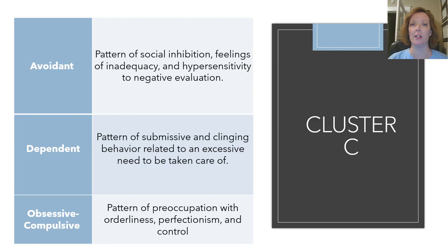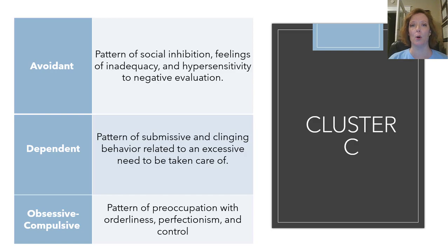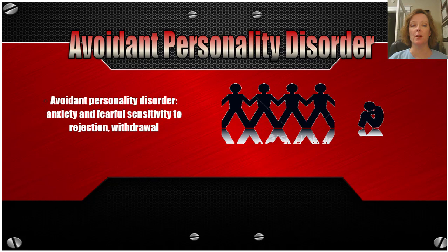The last cluster includes avoidant personality disorder, dependent personality disorder, and obsessive-compulsive personality disorder, which is different from obsessive-compulsive disorder — we'll get to those differences in a moment. Avoidant personality disorder involves a pattern of social inhibition, feelings of inadequacy, and hypersensitivity to negative evaluation. Dependent personality disorder involves a pattern of submissive and clinging behavior related to an excessive need to be taken care of. Obsessive-compulsive personality disorder includes a pattern of preoccupation with orderliness, perfectionism, and control. With avoidant personality disorder, the person experiences a lot of anxiety and fearful sensitivity to rejection and tends to be withdrawn, but can still maintain certain relationships without major disruption to daily life.